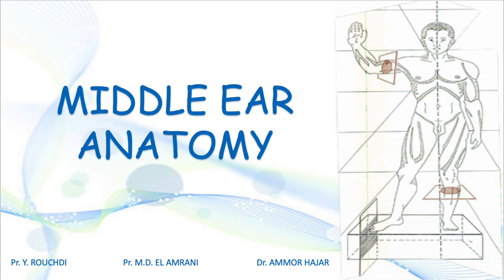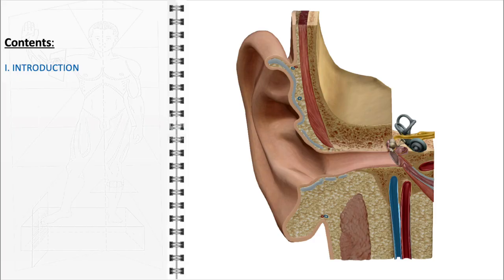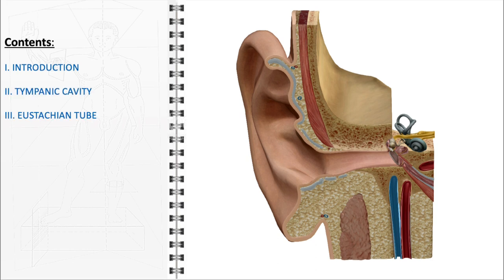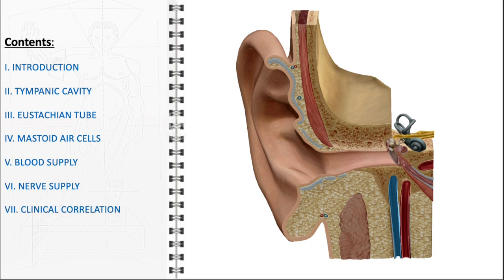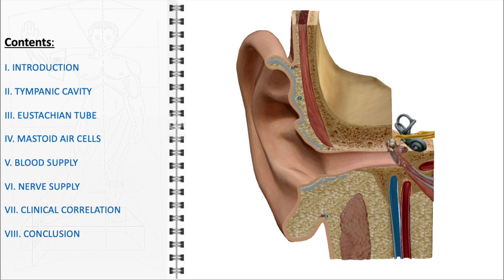In this video, we will delve into the detailed anatomy of the middle ear, a fascinating and complex part of the human auditory system. We will begin with an overview of the middle ear, then examine its three main components: the tympanic cavity, the eustachian tube, and the mastoid air cells. We'll also cover the role of the mastoid air cells, the blood and nerve supply, pathologies such as otitis media, and conclude with key takeaways.